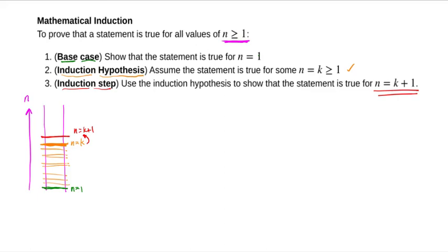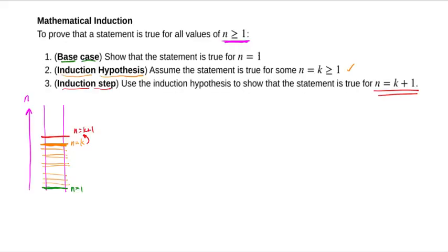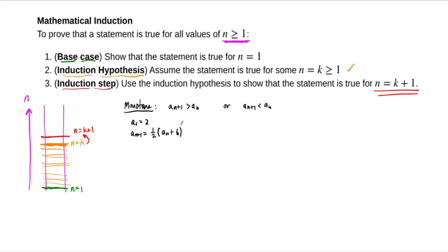We're going to use induction to show two things. Our goal is to show that our recursively defined sequence is both increasing and bounded. We don't know if it's increasing, but it has to be monotone and bounded. We'll prove both by induction. For the monotone portion, we want to prove that a sub n+1 is greater than a sub n. In our recursive definition, a1 equals 2 and the next term is always given by the recurrence formula: add 6 then divide by 2.